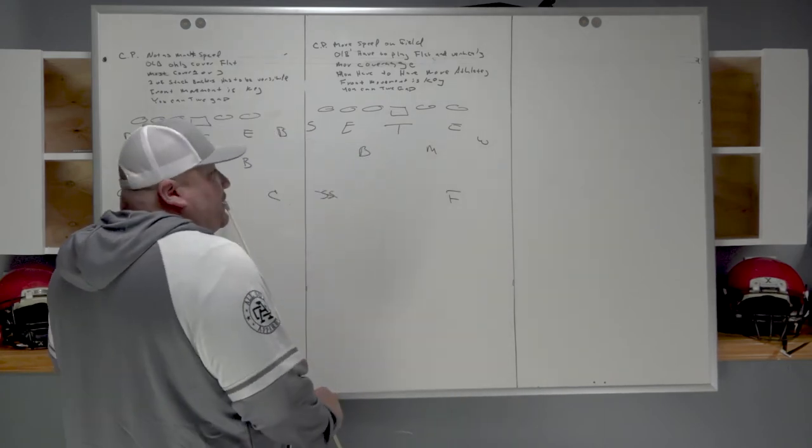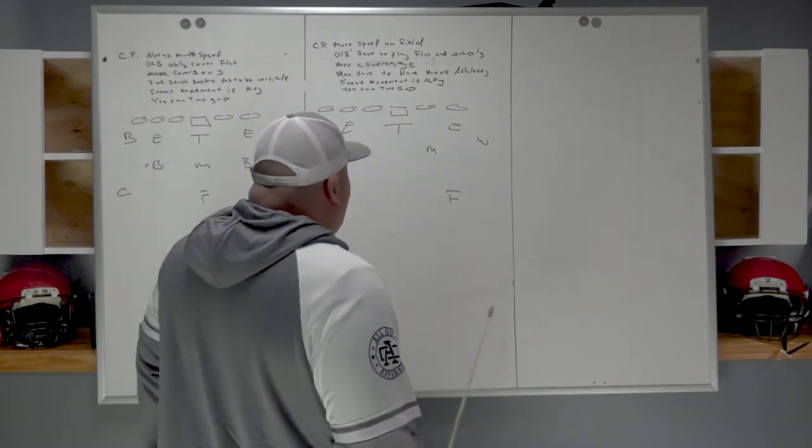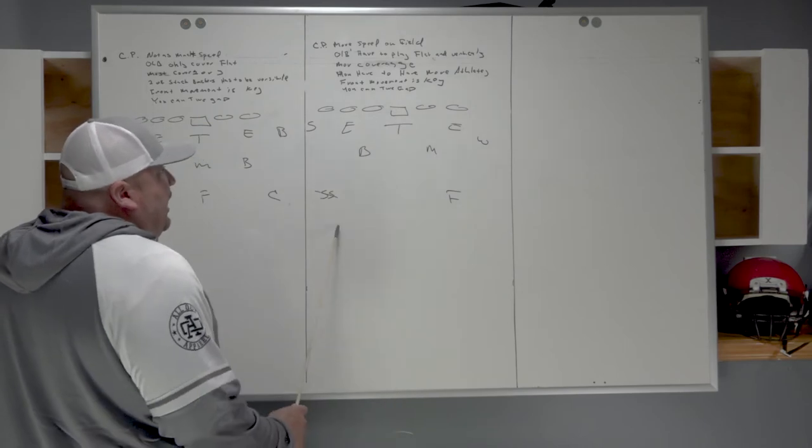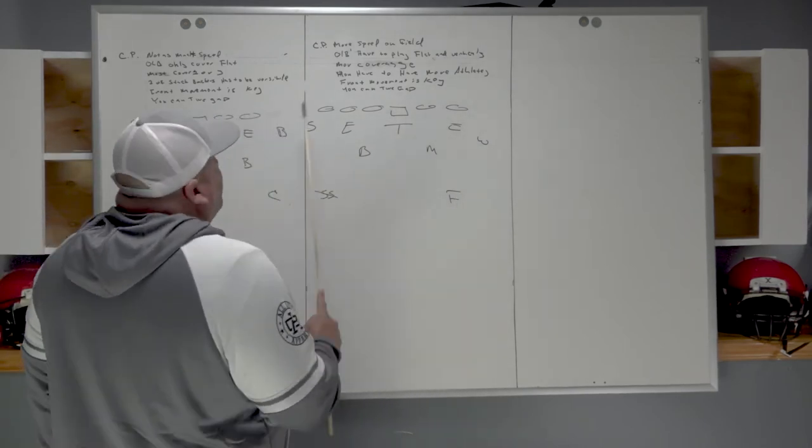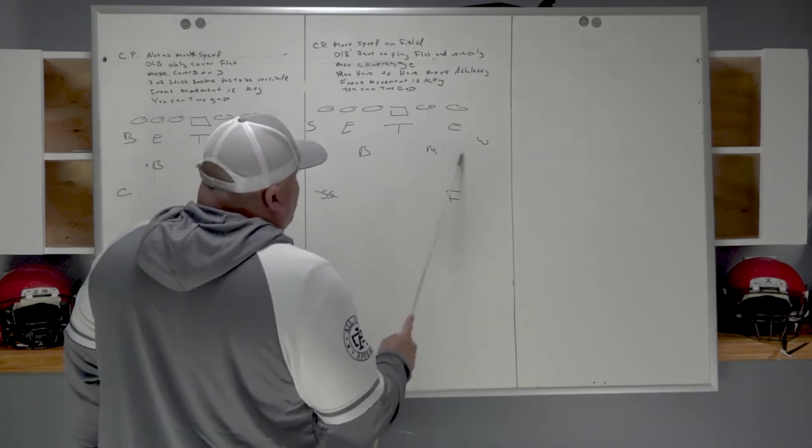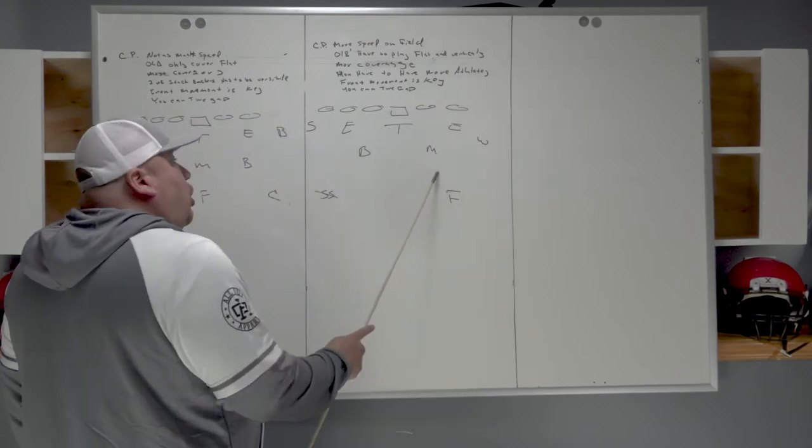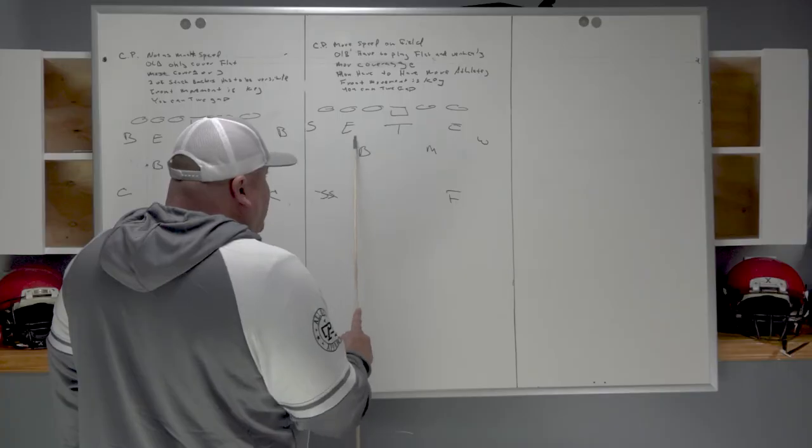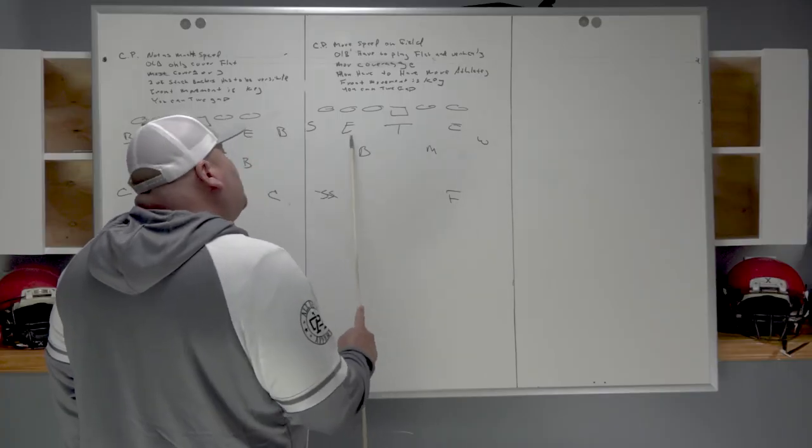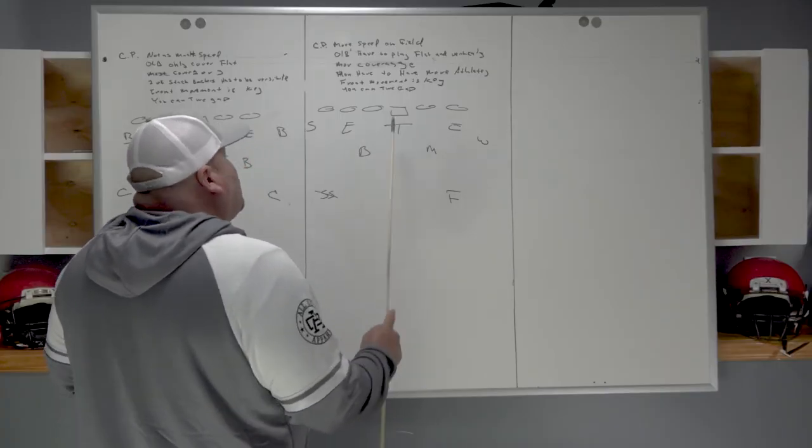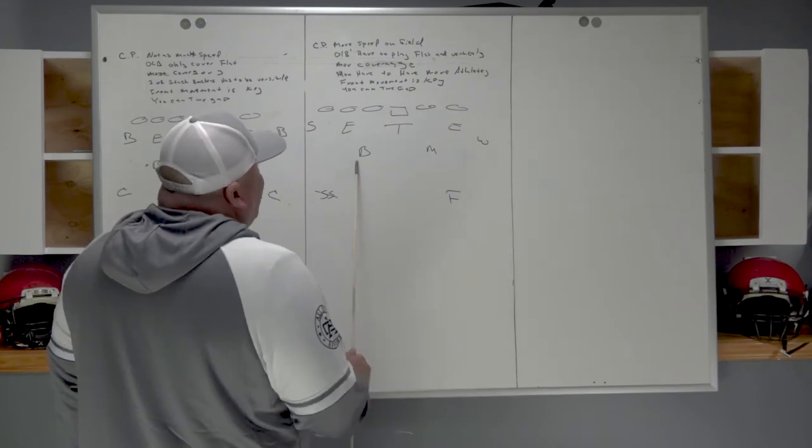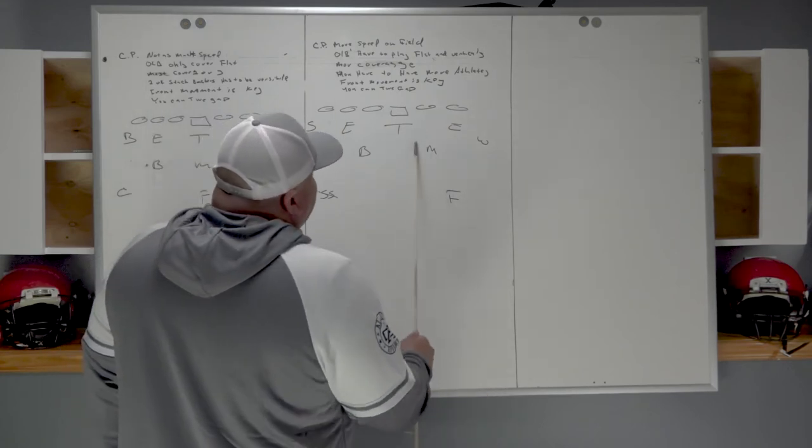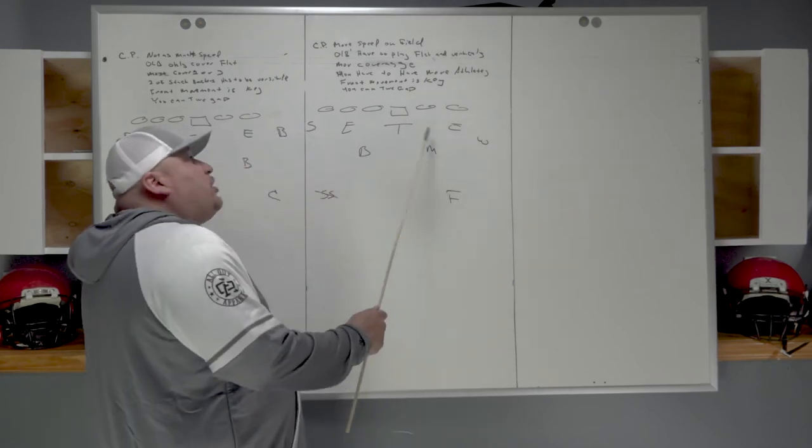Here, Sam and Will have to be able to play the flats, but they also have to be able to play the hooks if necessary depending on the call. The Buck backer is going to be the more athletic because in today's game with trips and doubles and all types of things, he may have to detach.